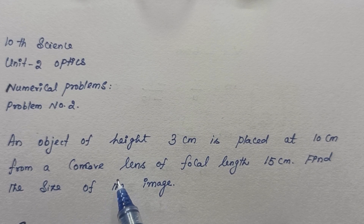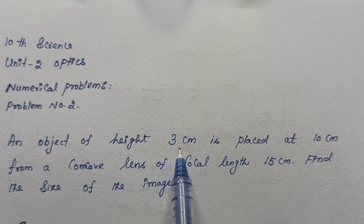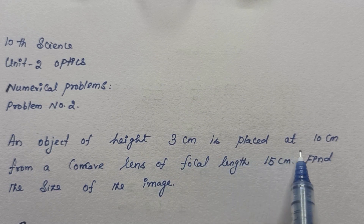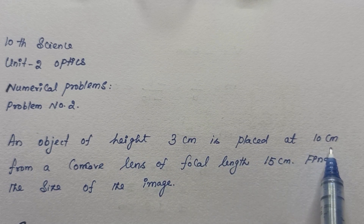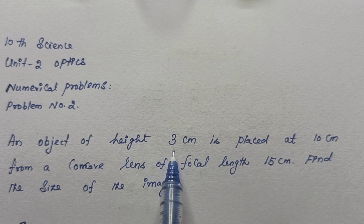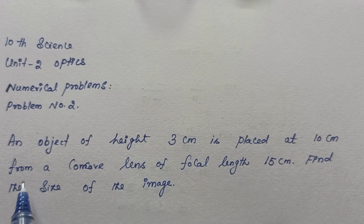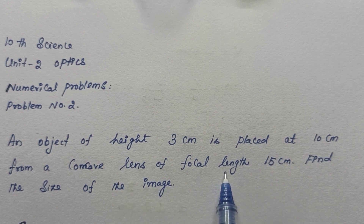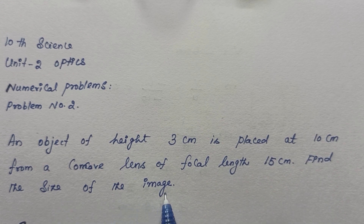Let's clearly note the given data for this problem. Object height is 3 cm, and the object is placed at 10 cm — that is, the distance of the object is given and the height of the object is given. The focal length of the concave lens is 15 cm. What is asked is the size of the image.